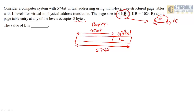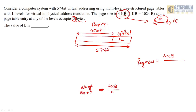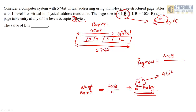Each page table must fit within one page of 4 KB. With entry size of 8 bytes, the number of entries per page table is 4 KB / 8 = 2^9 = 512. So each level requires 9 bits of address. With 45 remaining bits divided by 9 bits per level: 45 / 9 = 5. Therefore, 5 levels of paging are required.